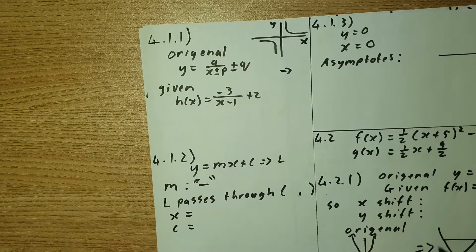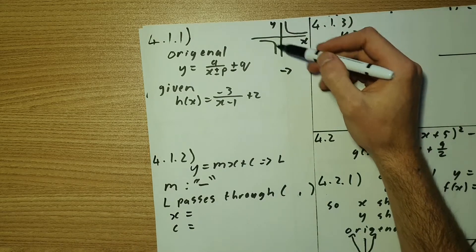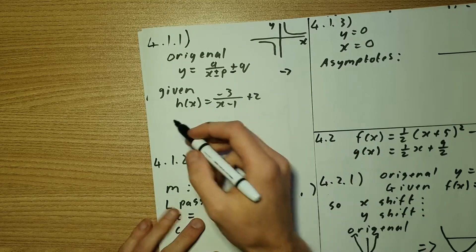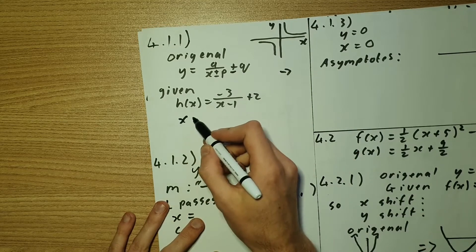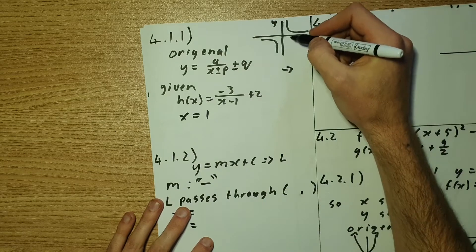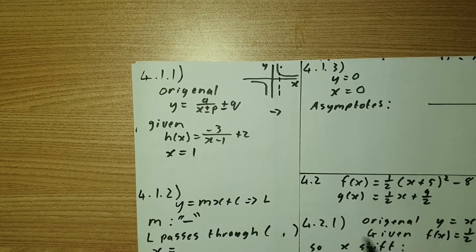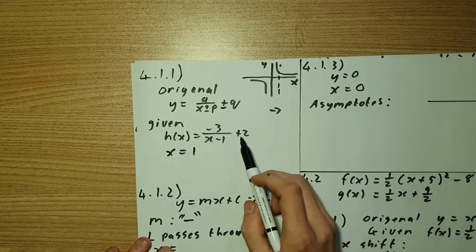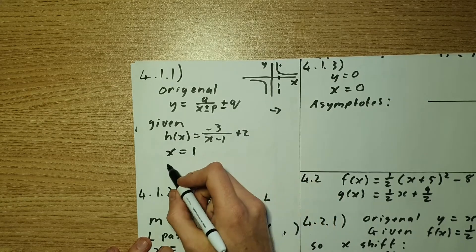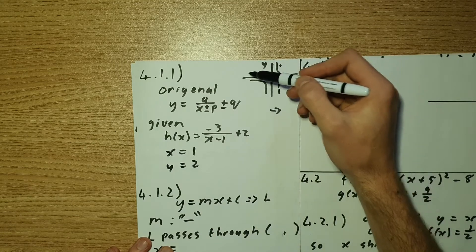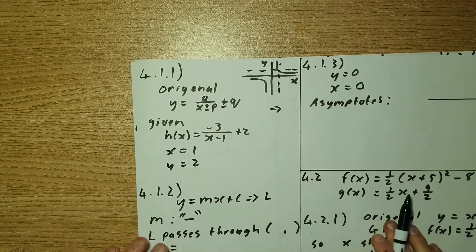So my original asymptotes are 0 and 0 but now because there's a shift in the x, my new asymptote for x is going to equal to 1. So it's going to be roughly here and for my y asymptote I'm going to have y equal to 2. Why? Because the entire graph shifted up by two units.